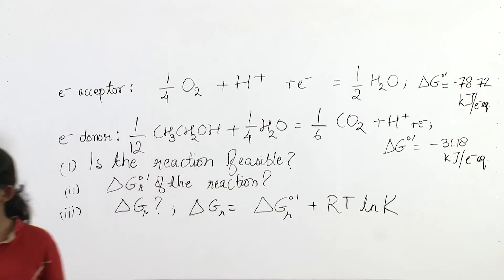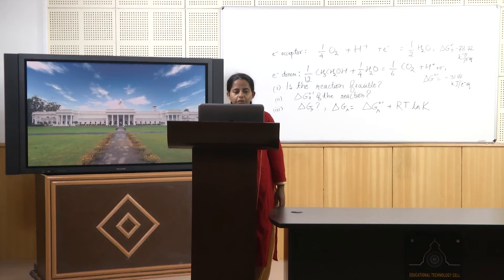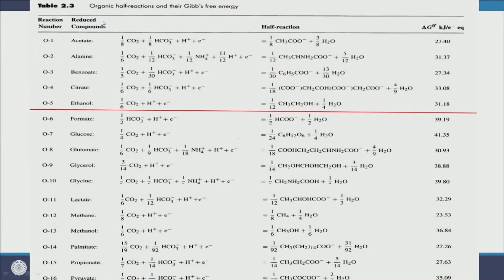Let us take an example using standard charts available in most microbiology books like Rittmann and McCarty. These charts have organic half reactions and their Gibbs free energy values. For example, the notation shows that when carbon dioxide and bicarbonate are reduced to form acetate, the overall change in Gibbs free energy is plus 27.4 kilojoules. Since this is positive, this reaction is not possible. If I ask in a test whether this reaction will happen, the answer is of course not, because the Gibbs free energy change is positive.